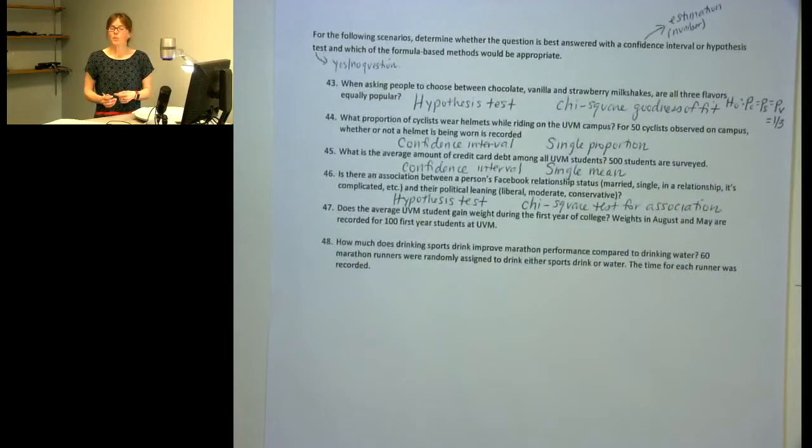And if you're trying to remember which one of the chi-squares is for sort of like a single categorical and which one's for a two-categorical, keep in mind that you can't have an association unless you have two variables. So the test for association is when you've got the two categorical variables.